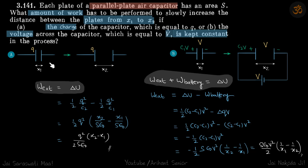So here ΔU is quite simply final potential energy minus initial potential energy of the capacitor: ½q²/C₂ minus ½q²/C₁. C₂ we can write as εS/x₂ and C₁ will be εS/x₁, which gives our answer.